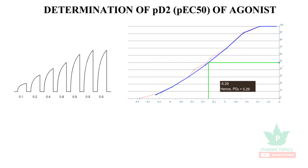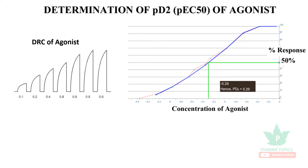We'll see the determination of PD2, which is for the agonist. The PD2 value of the agonist is the concentration of the agonist required to elicit a 50 percent response. First, the DRC of the agonist will be taken — that is, log molar concentration versus response of the agonist will be plotted.